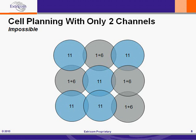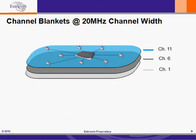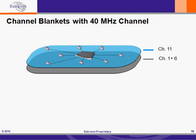Can we use channel bonding in a channel blanket architecture? The answer is a definite yes. Instead of three non-interfering channel blankets in the 2.4 GHz band, there will be two non-interfering channel blankets. The 40 MHz channel — channels 1 plus 6 — is one channel blanket, and the remaining channel 11 forms a second channel blanket. Since there is no need to cell plan, having only two 2.4 GHz channels doesn't present any planning problems. Co-channel interference is still zero.